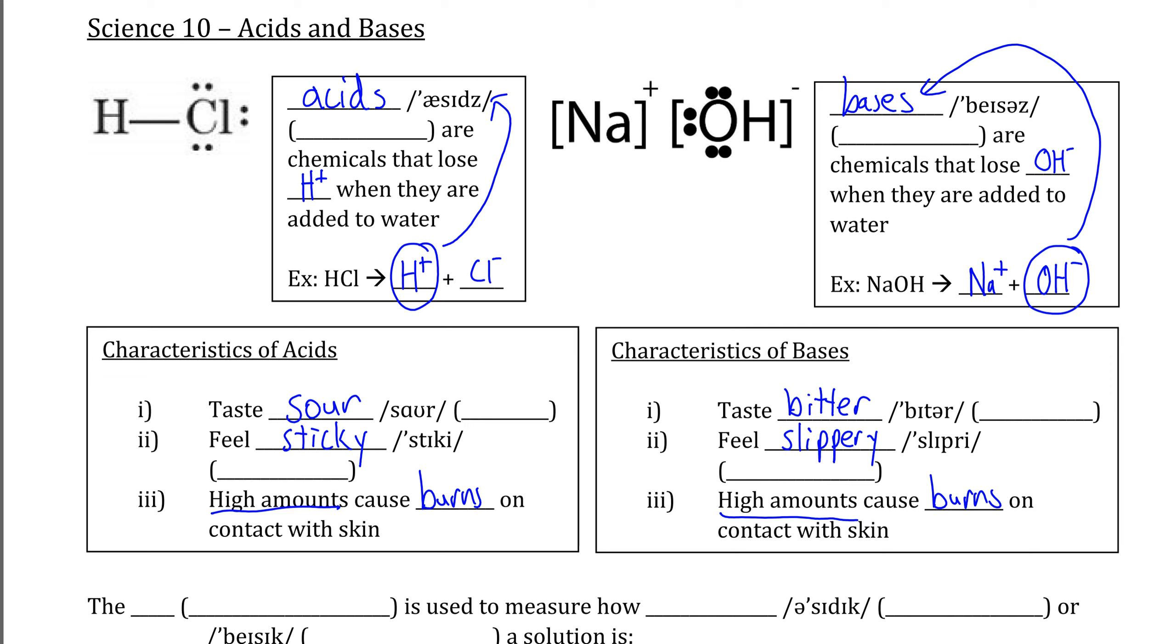Basically, what acids or bases do if we have enough of them is that they actually start to dissolve the molecules that your skin and cells are made out of, the same way that water is able to dissolve substances like salt and sugar. Is every acid or base going to do this? No, obviously not, which is why we specify that this only happens whenever we have high amounts of a given acid or base.